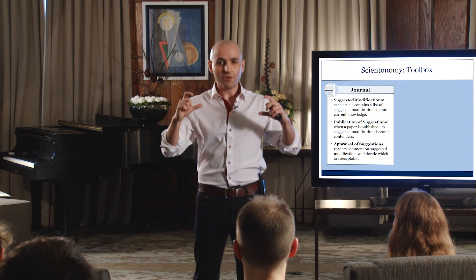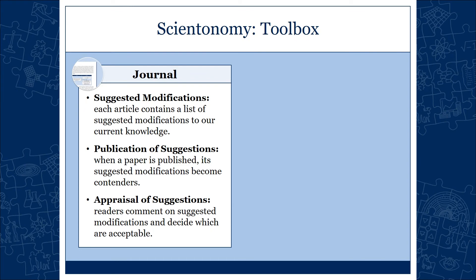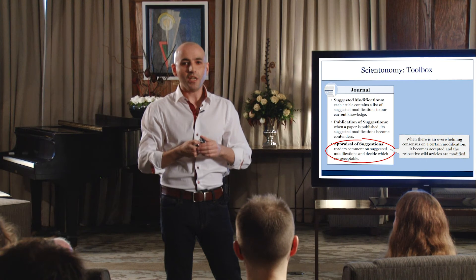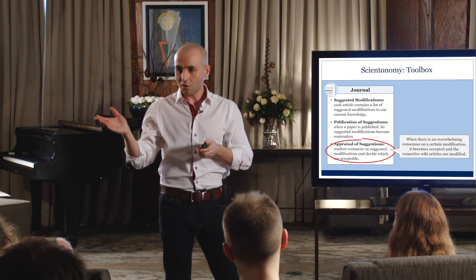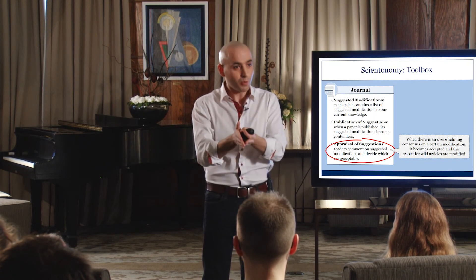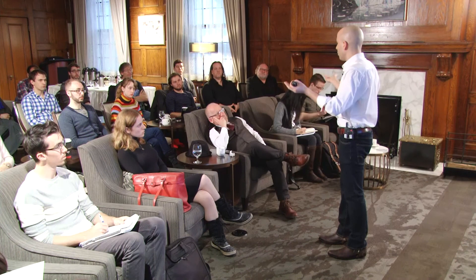After a certain time period, after readers comment on suggested modifications and decide which are acceptable, we will know exactly what the community thinks. If there is overwhelming consensus, the modification is accepted — we update the respective wiki articles and, if needed, the historical database. The point is that at any moment of time we would know the current state of knowledge. We might be wrong, but at least we know where we stand and can improve on that, as opposed to not knowing where we stand at all. This is a piecemeal approach.